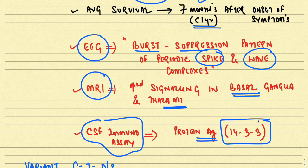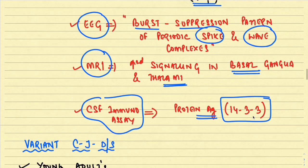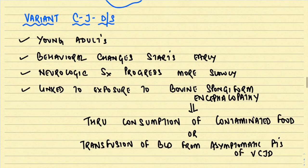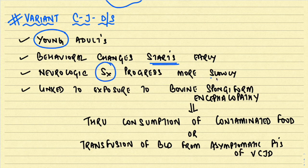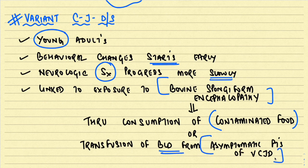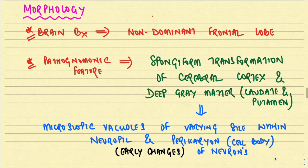Variant CJD differs from the classic variety because it affects younger adults, behavioral changes start quite early, the neurological syndrome progresses more slowly than classic CJD, and it is linked to exposure to bovine spongiform encephalopathy through consumption of contaminated food or transmission of blood from asymptomatic patients of variant CJD.